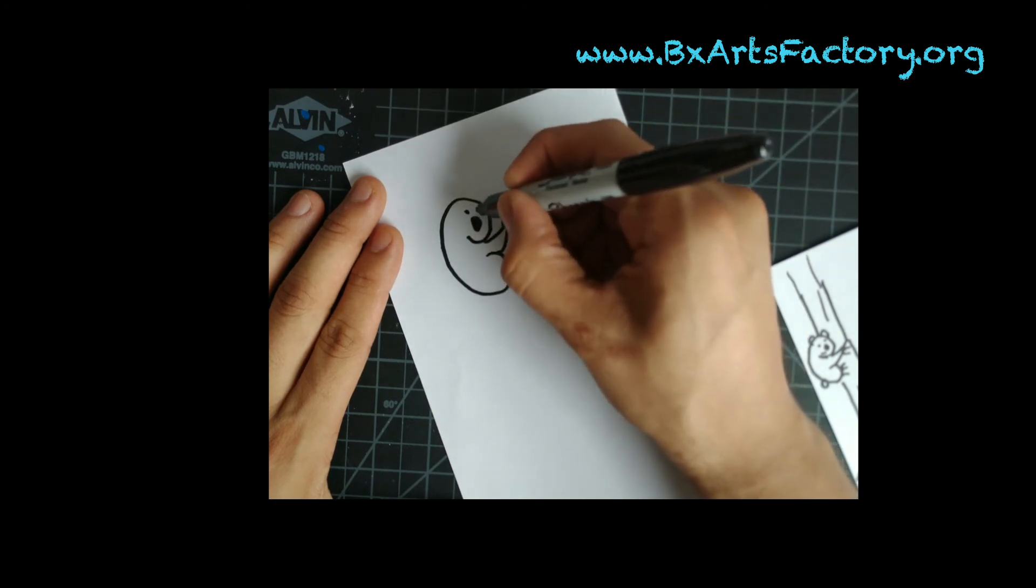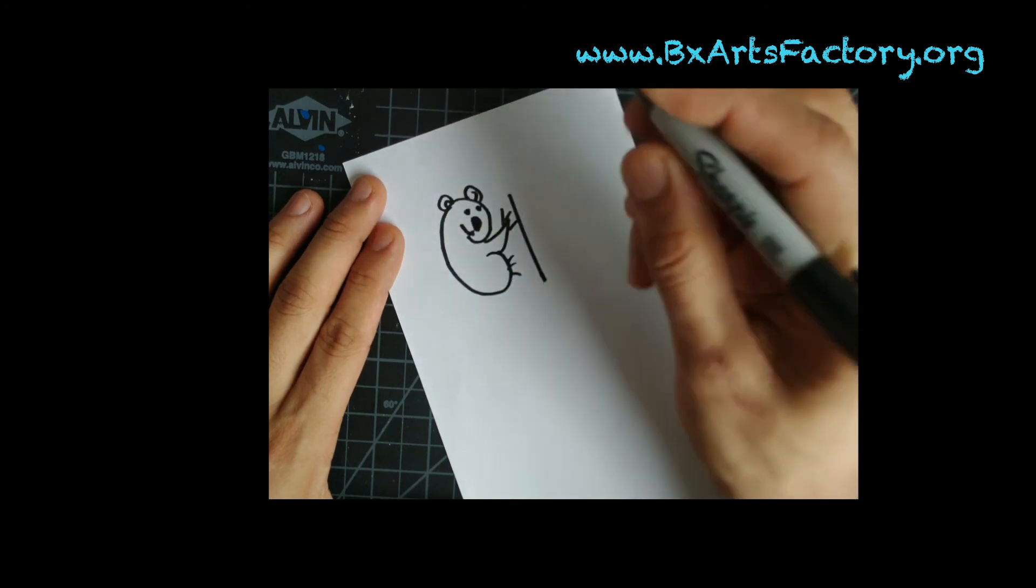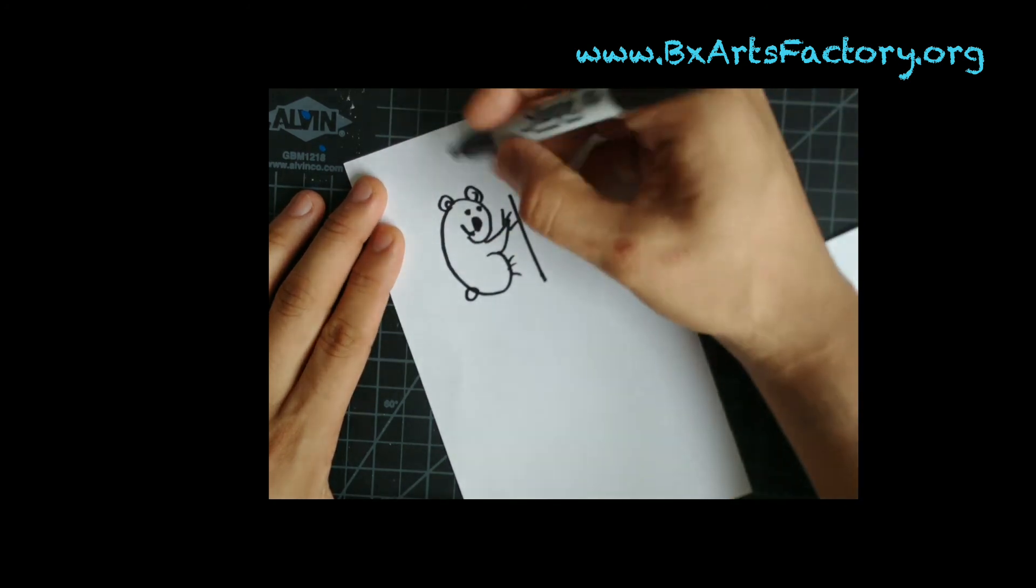Nose. Eye, eye. Smile. Ear, ear. Little tail. And you draw your branches.